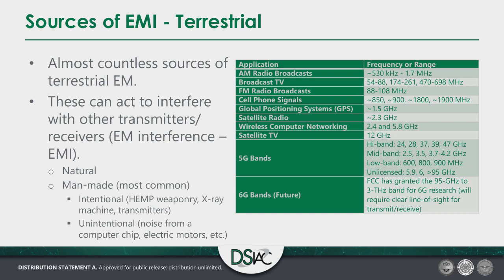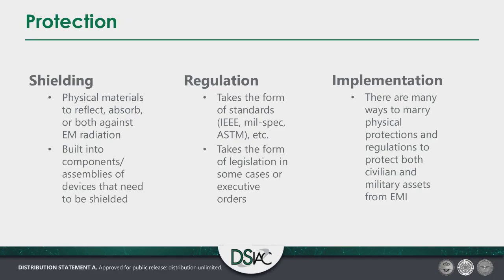Within this, there are also intentional as well as unintentional EMI transmitters. Unintentional might be noise from a computer chip or an electric motor. Intentional sources include high-altitude electromagnetic pulse weaponry that could be deployed against us, x-ray machines, transmitters — some intentional but not directed at us as a weapon, and some intentional and directed at us as a weapon. We need to find ways to address both.